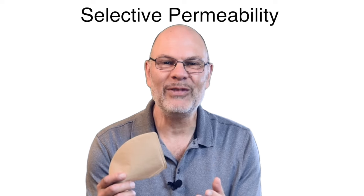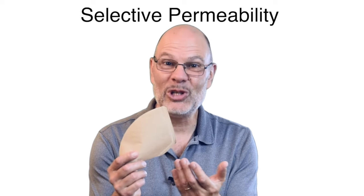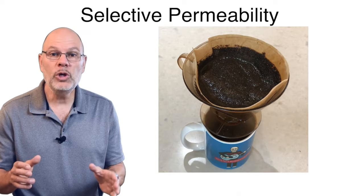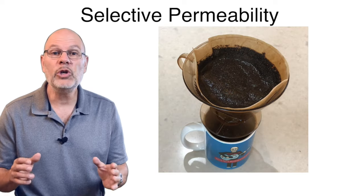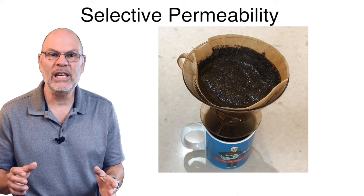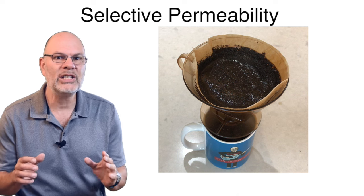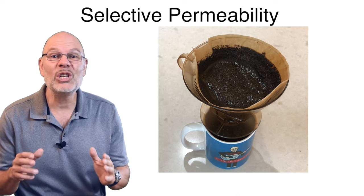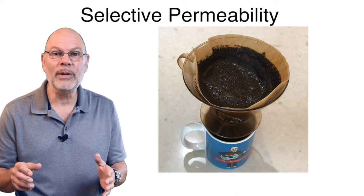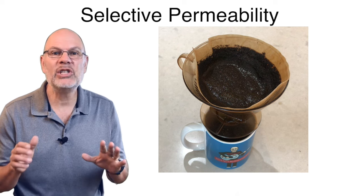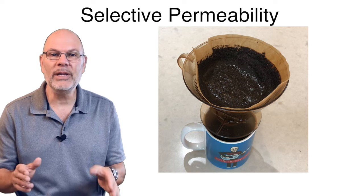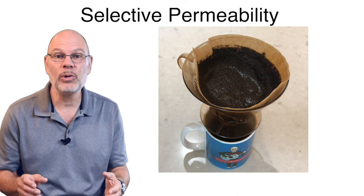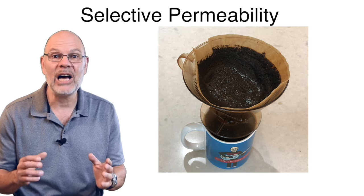Cell membranes are selectively permeable, just like this coffee filter. When you make coffee, you use the filter to keep out the grounds and to let the dissolved coffee pass through. And that's what selective permeability is — it's a membrane's ability to allow some things to pass through, but not others.